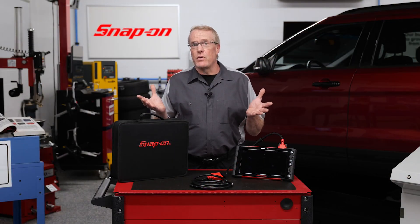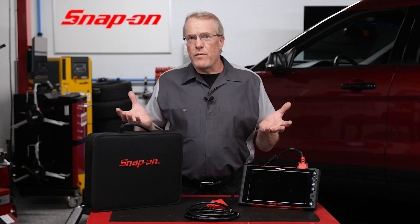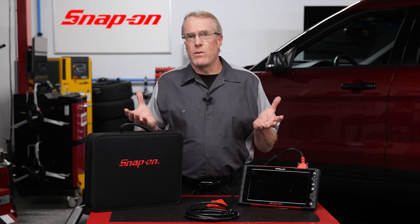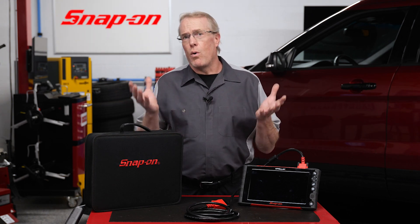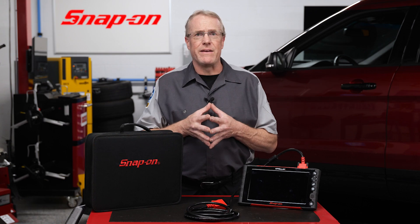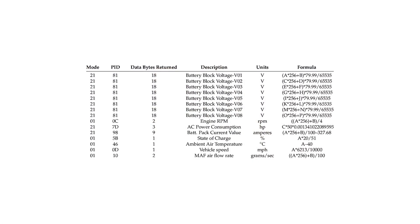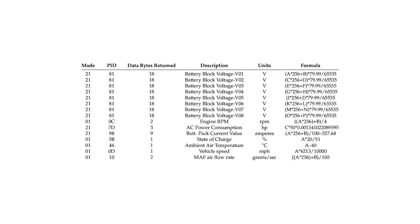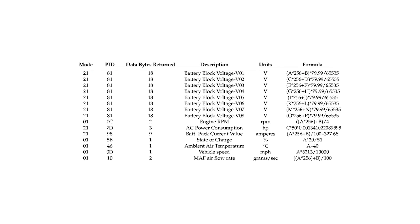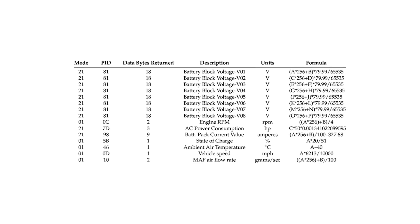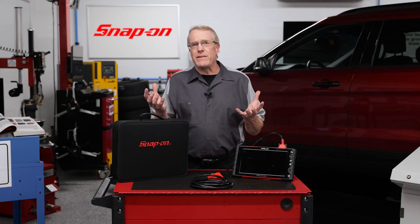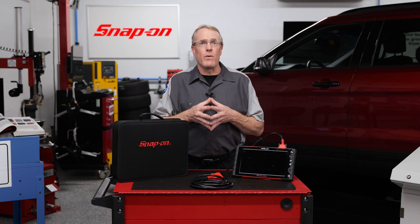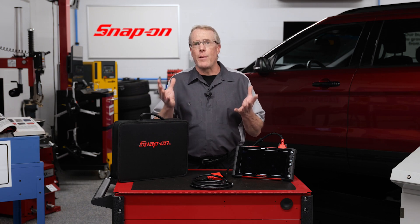We're going to take a closer look at one of them today called Smart Data. When we're faced with trouble code diagnostics, one of the valuable tools we use is PIDs, or parameter identifiers, which are codes used to request specific information from a vehicle control unit and display that information as data we can understand. We evaluate these PIDs by determining if they are within their normal operating range.